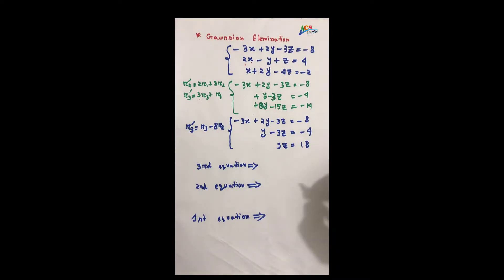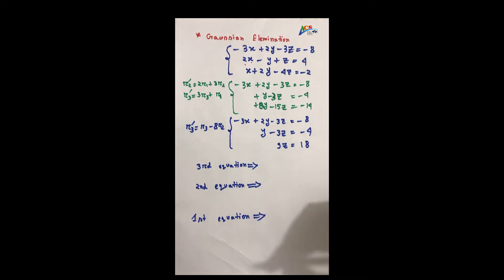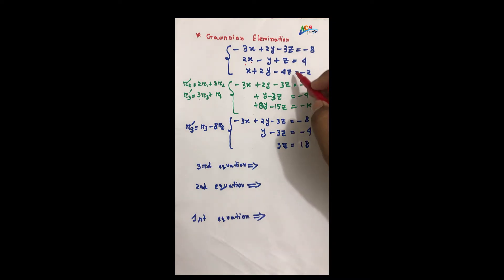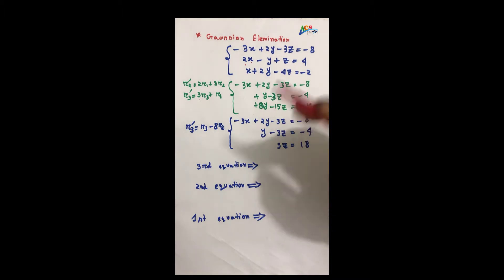Gaussian Elimination is a solution method for a system of linear equations. This is one of the most simple ways to find out the solution. The first step is that the A matrix equals the augmented matrix. The diagonal element is 0.